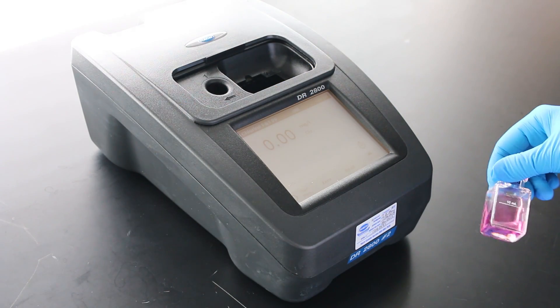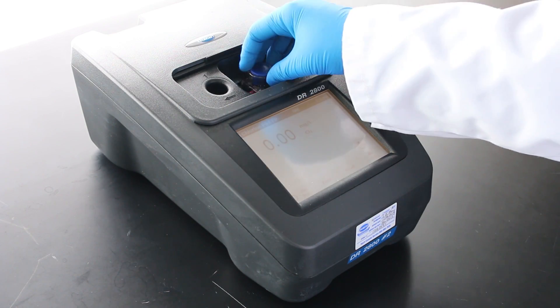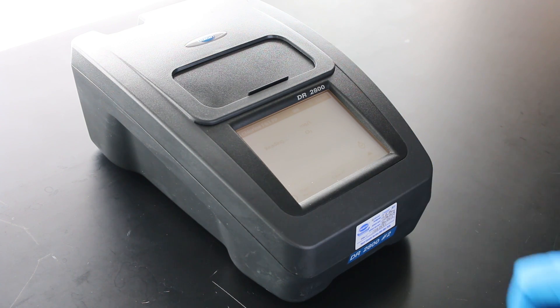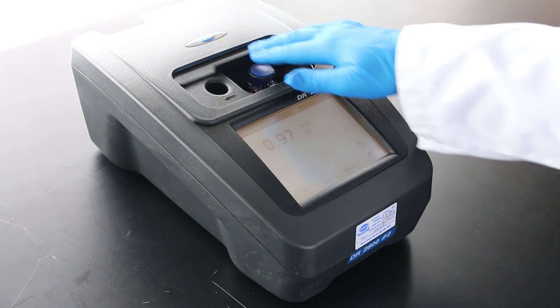Within 60 seconds of the addition of the DPD reagent, insert the sample cell into the instrument and read the sample. The results will show in milligrams per liter of chlorine.